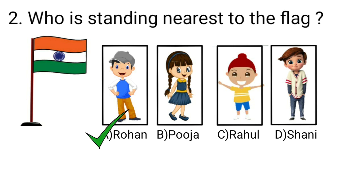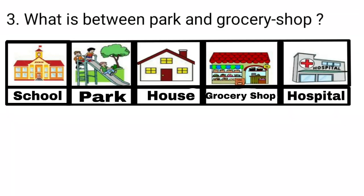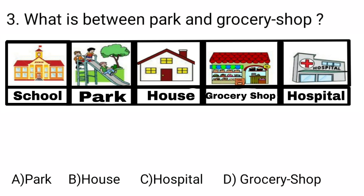Now next, question number 3 is, look at the picture and tell what is between park and grocery shop. Dear students, here again four options are given. Option A is park, option B is house, option C is hospital, and option D is grocery shop.